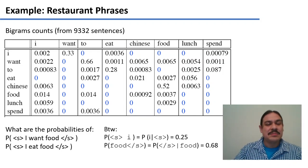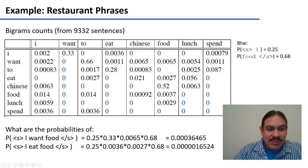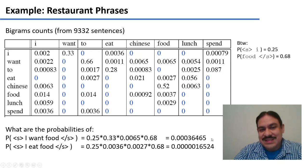Welcome back. So the probability of the sentence is the probability of the bigram start of the sentence I, which is 0.25, then I followed by want, which is 0.33, then want food, which is here, 0.0065, multiplied by food end of sentence, which is here, 0.68. This multiplication is 0.00036465.